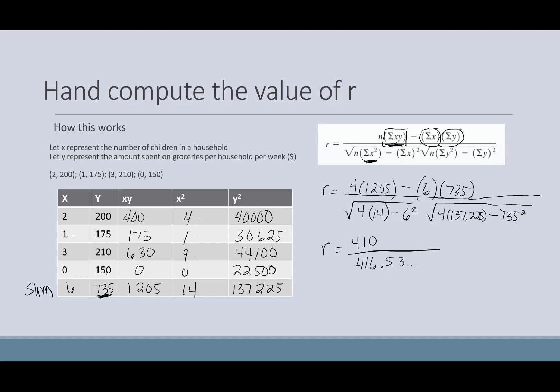So now to finish this off, I just need to do my division. I need to take my numerator divided by my denominator. And when I do that, I come up with r is equal to 0.9843.